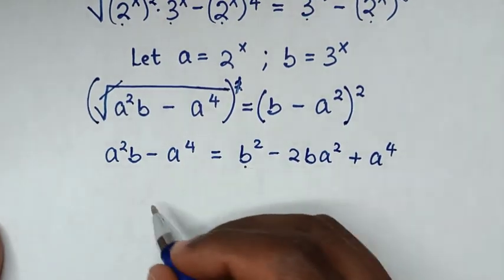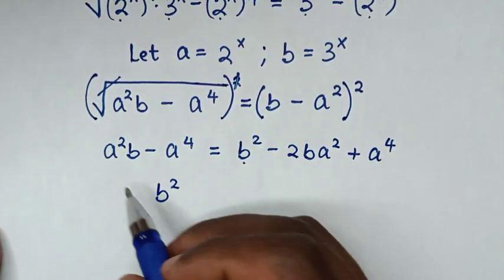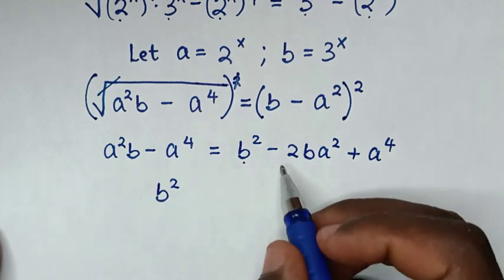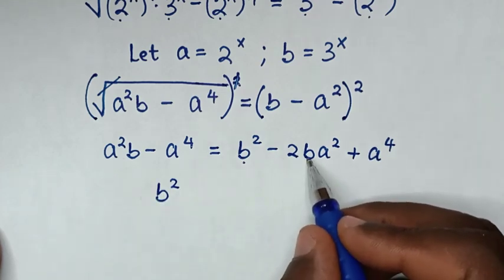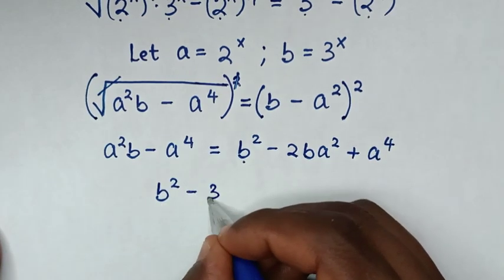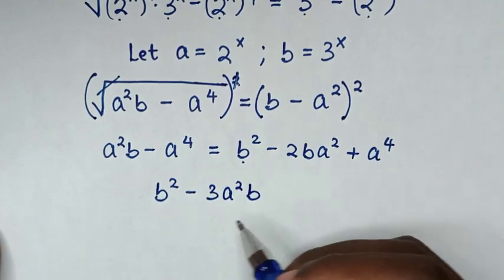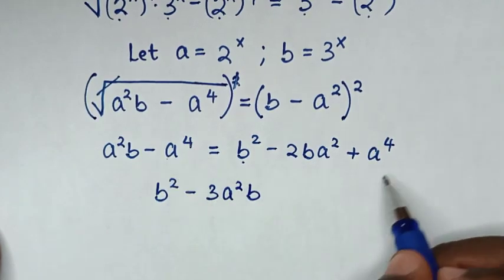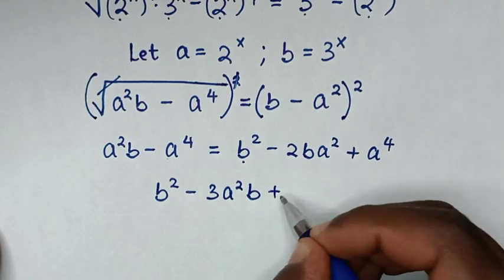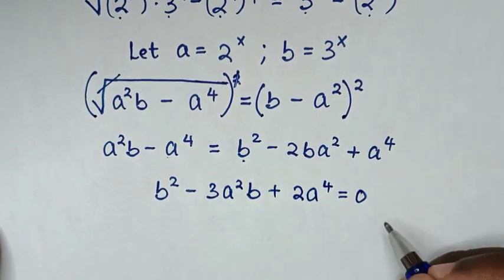So it starts with b². Then we take a²b to this side, so it becomes minus 2a²b minus a²b, which is minus 3a²b. And taking negative a⁴ to this side gives plus a⁴ plus a⁴, which is plus 2a⁴, all equal to 0. So we have: b² minus 3a²b + 2a⁴ = 0.